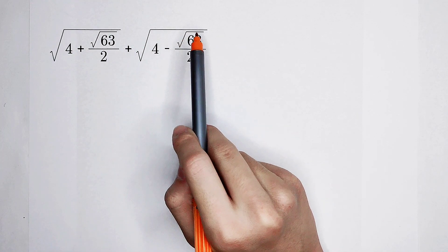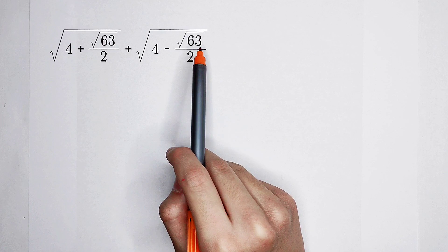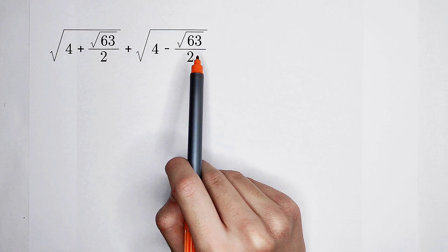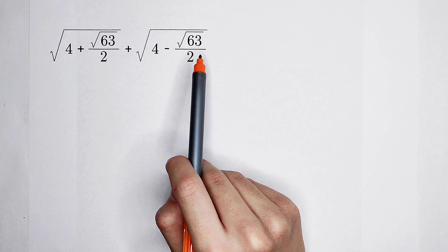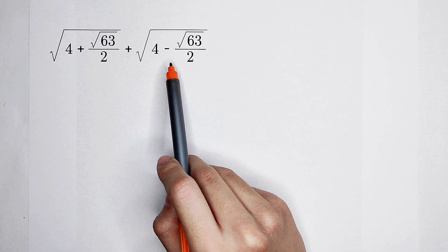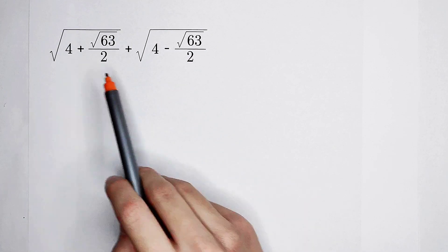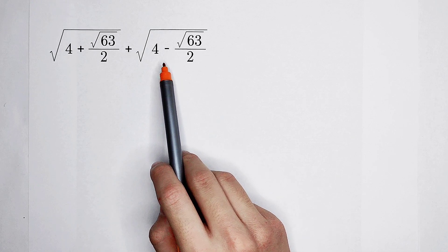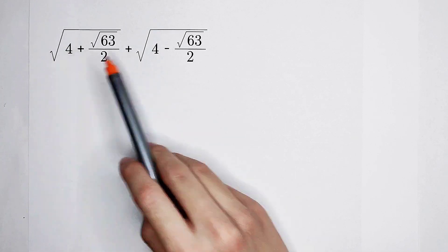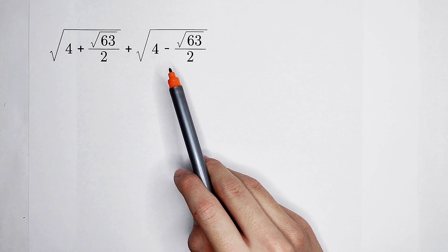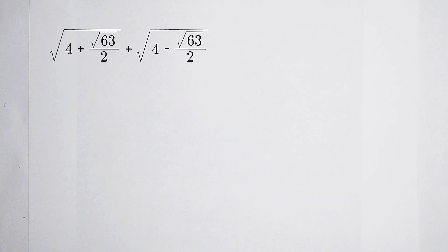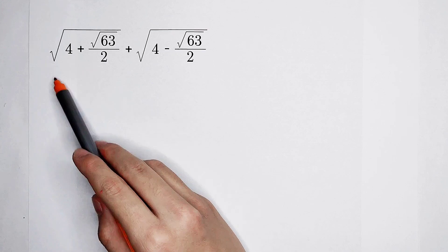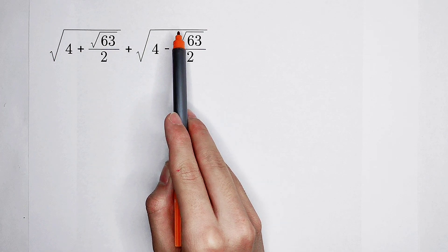This huge guy is a sum of two numbers, and these two numbers look really alike. Only one thing about them is different. Here is plus, here is minus. So we know that these two guys are conjugated. By the way, all of us have noticed there are two minus square roots.